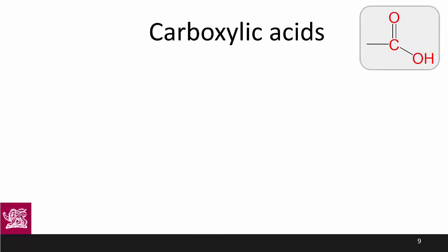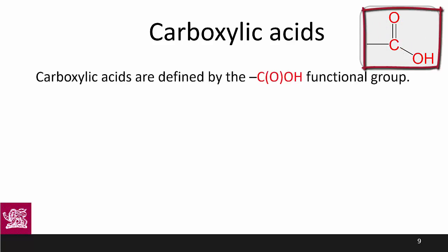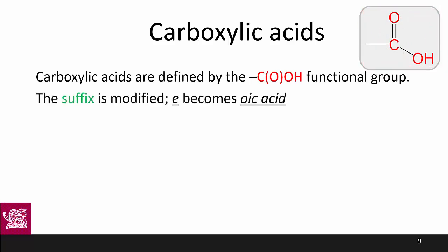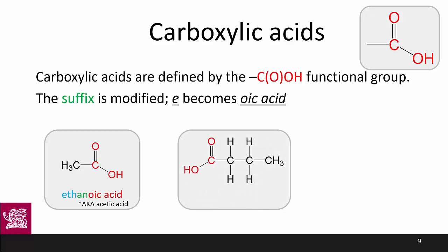Moving on now to carboxylic acids. The key feature of a carboxylic acid is a carbon bonded to an OH and also double bonded to an oxygen. This is not an alcoholic group because of the double bond to oxygen, nor is it a ketone because of the OH. This arrangement of atoms together indicates a carboxylic acid. In naming carboxylic acids, the suffix '-e' is modified to '-oic acid'. Our first example is ethanoic acid, also known as acetic acid — the acid in vinegar at a concentration of about four to seven percent. Our next example is butanoic acid, which happens to smell like vomit.